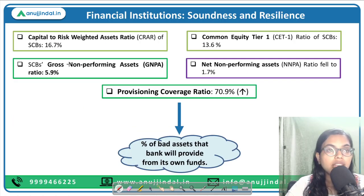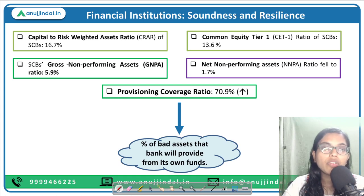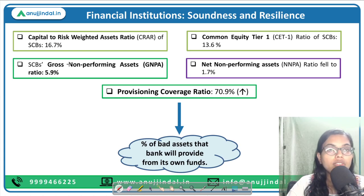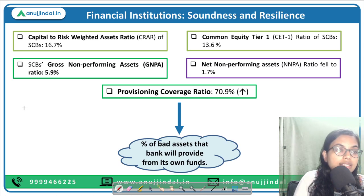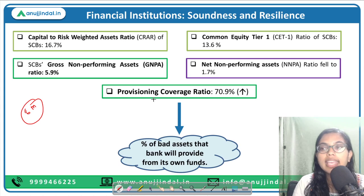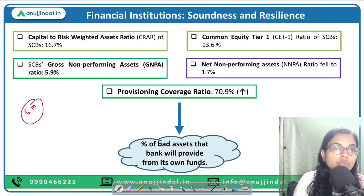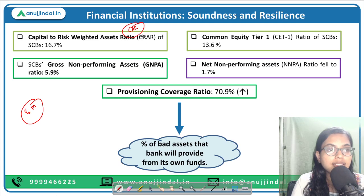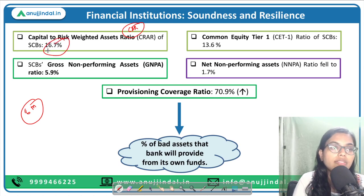Moving forward to the second important category — financial institutions — how are they performing, their soundness and resilience. During this six-month period during which the report was prepared, scheduled commercial banks have maintained robust capital positions with the Capital to Risk-Weighted Assets Ratio — the Capital Adequacy Ratio — at 16.7 percent for scheduled commercial banks.